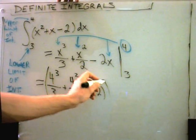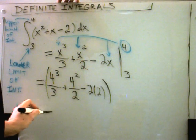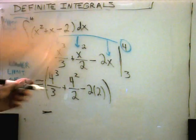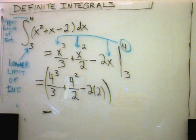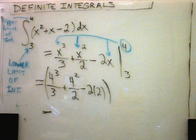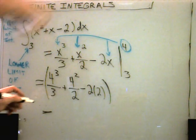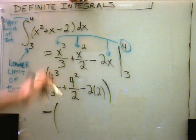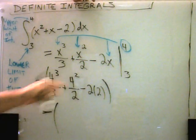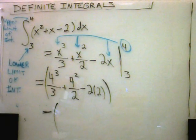And then what we do is we subtract off when we plug in the lower limit. And just like we plugged the upper limit in, we're going to plug the lower limit in everywhere as well. It's a good idea to use parentheses because you're going to have to distribute the negative to every term if you don't simplify first.